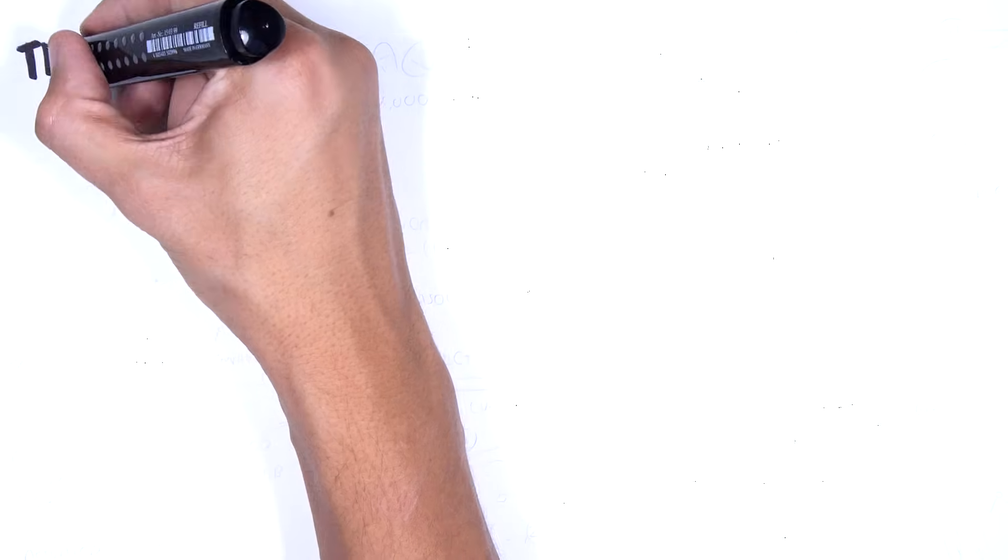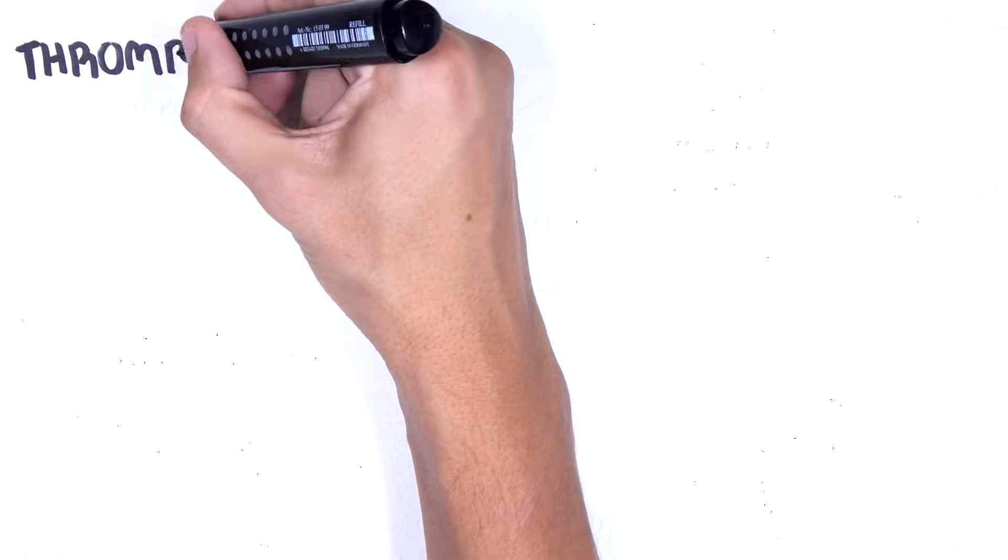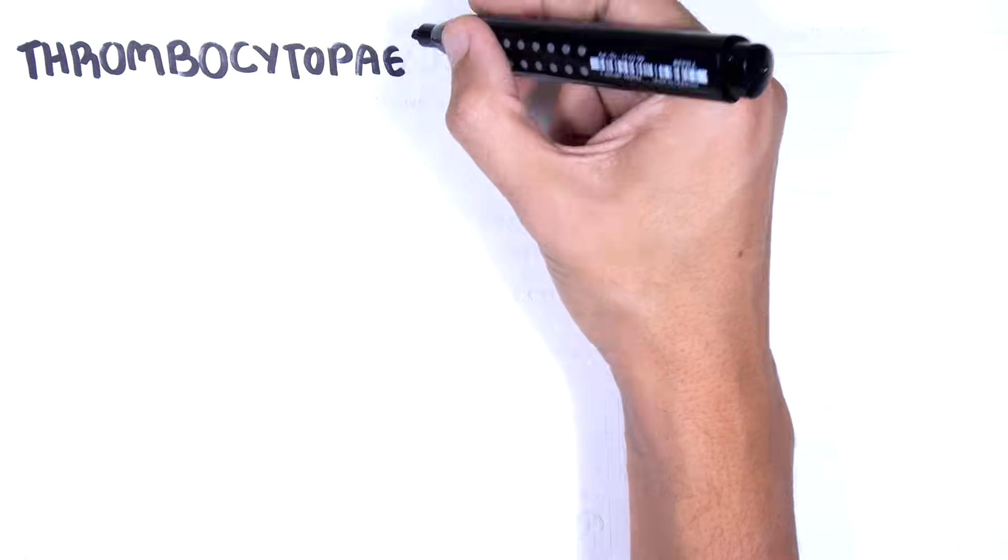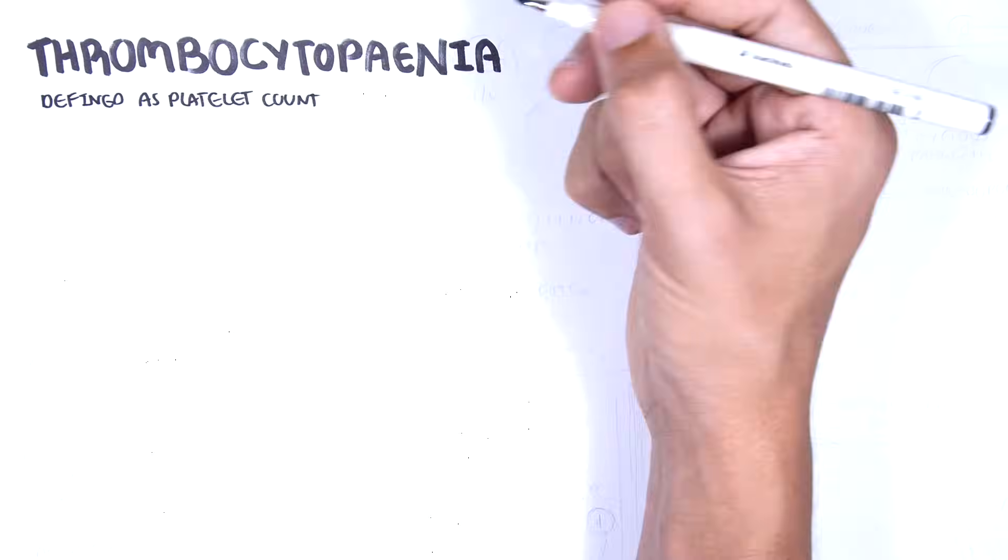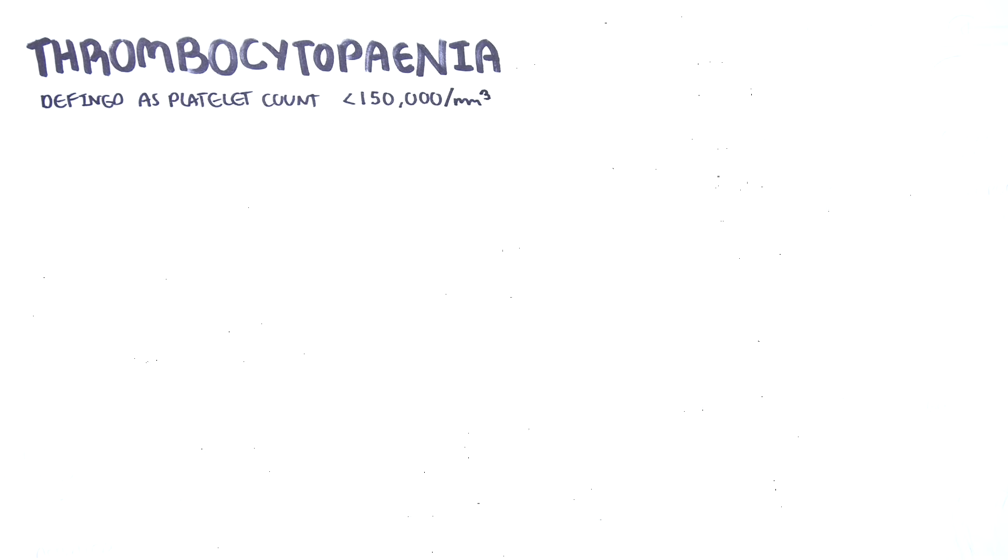is associated with a variety of conditions. Thrombocytopenia is defined as a platelet count below the lower limit of normal, which is less than 150,000 microliters or less than 150,000 cubic millimeters.